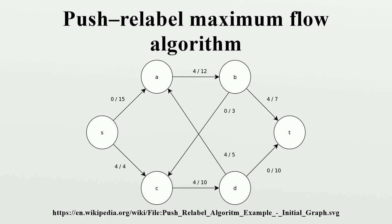This labeling function must satisfy the following conditions in order to be considered valid. In the algorithm, the height values of S and T are fixed. The height is a lower bound of the unweighted distance from a vertex U to T in the residual graph if T is reachable from U. If U has been disconnected from T, then the height is a lower bound of the unweighted distance from U to S. As a result, if a valid height function exists, there are no S-T paths in the residual graph. An edge is called admissible if the height condition holds, and the admissible network is acyclic.